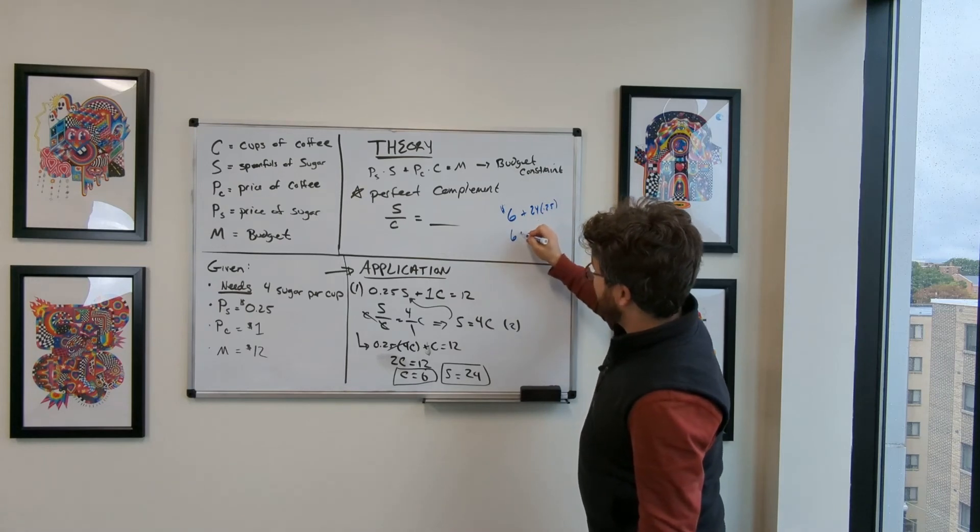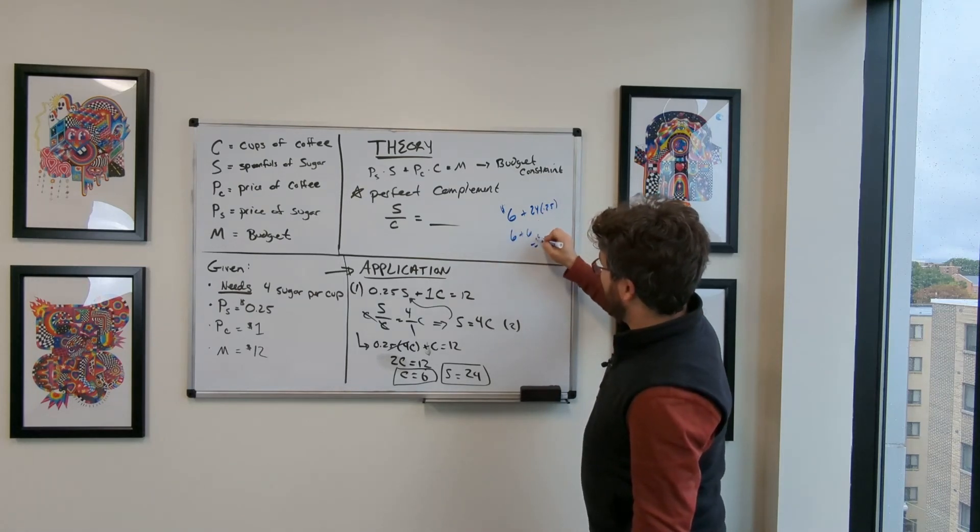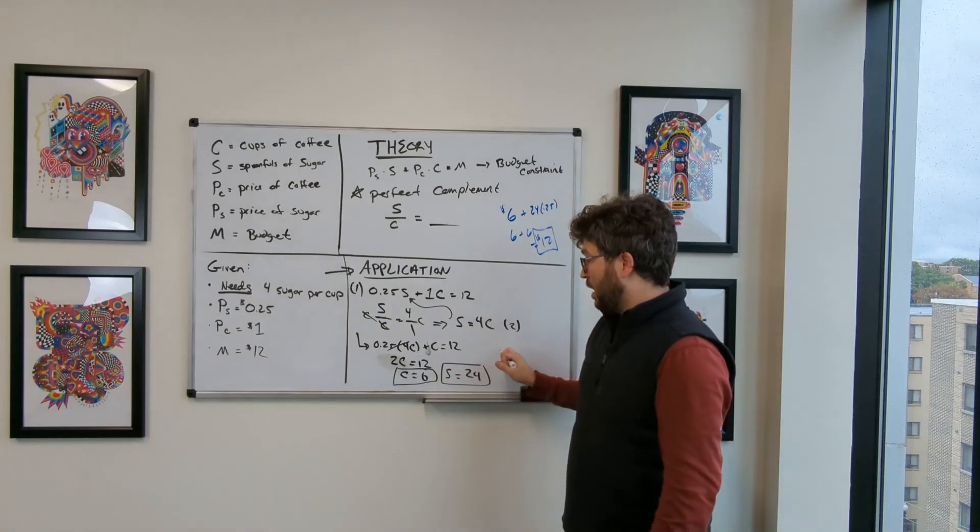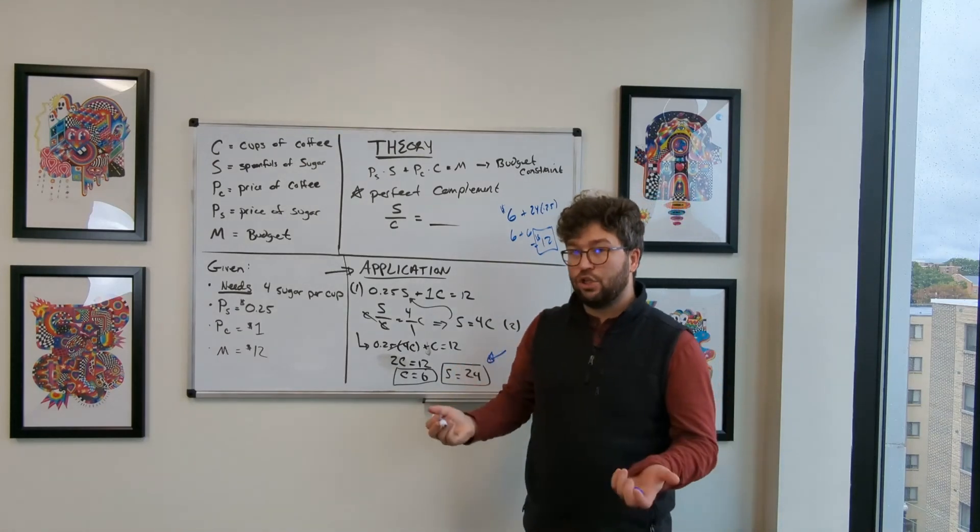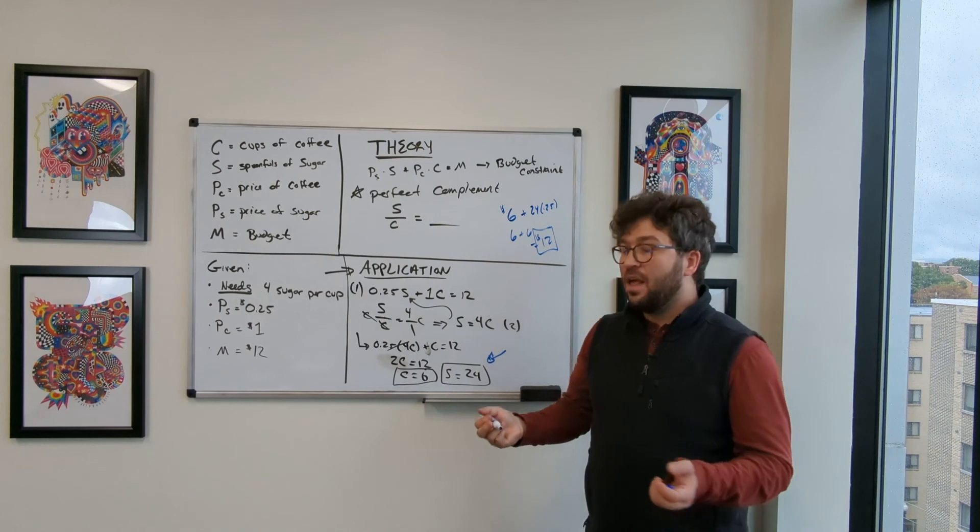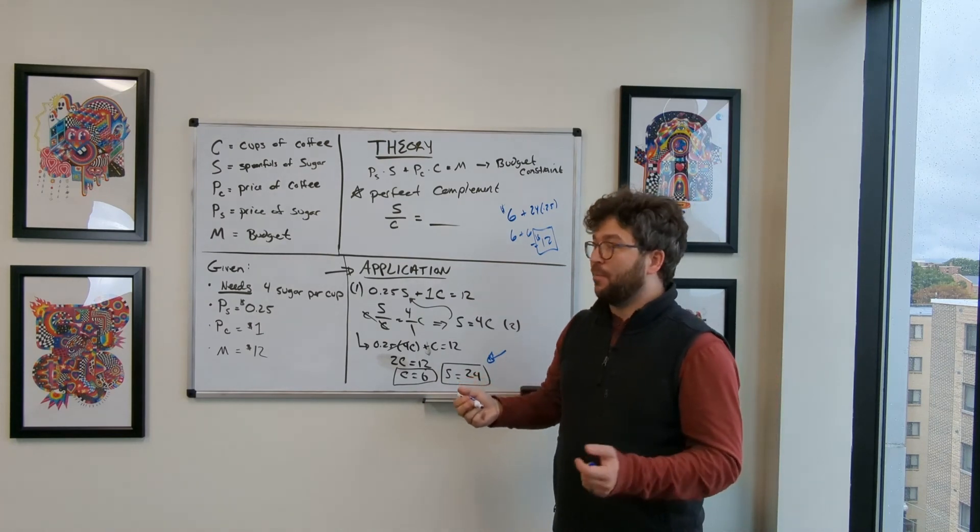That's actually six plus six, which is equal to 12. So we have found the optimal combination of sugar and coffee that will optimize this problem.